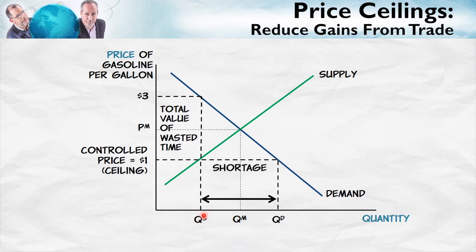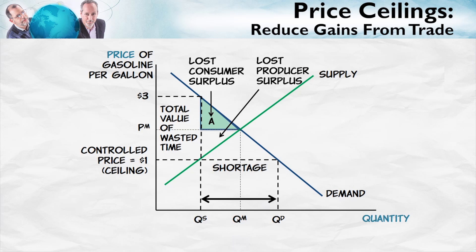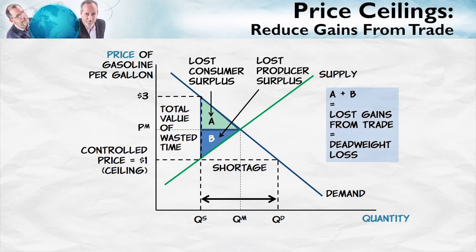So these trades between QM and QS do not occur. In a free market they would occur, and because they would occur, they would generate additional gains from trade. Compared to the free market equilibrium, under the price control we have lost consumer surplus in the amount of area A, and lost producer surplus in the amount of area B. Together, A plus B is the lost gains from trade — the mutually profitable exchanges which fail to take place because of the price control. So price ceilings reduce the gains from trade, creating a deadweight loss.